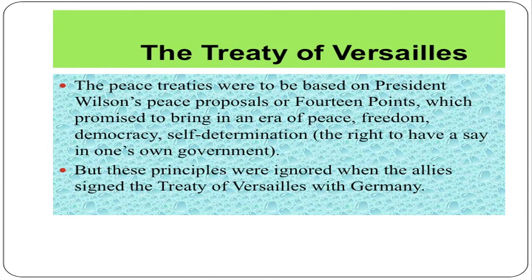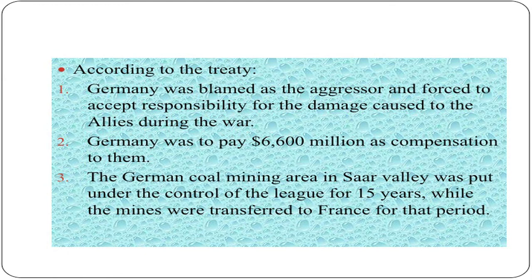The peace treaties were to be based on President Wilson's peace proposals — the 14 Points — which promised to bring an era of peace, freedom, democracy, and self-determination: the right to have a say in one's own government. But these principles were ignored when the Allies signed the Treaty of Versailles with Germany. According to the treaty, Germany was blamed as the aggressor and forced to accept responsibility for the damage caused to the Allies during the war.